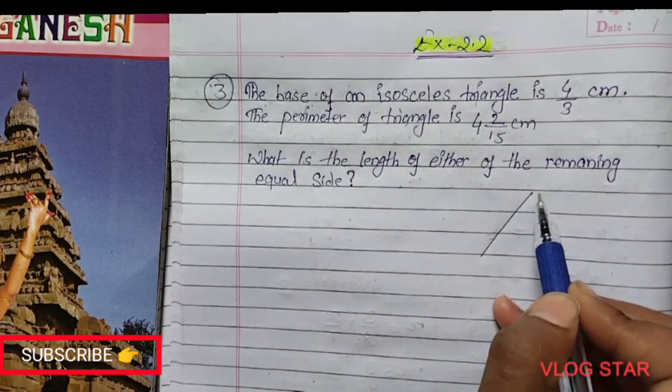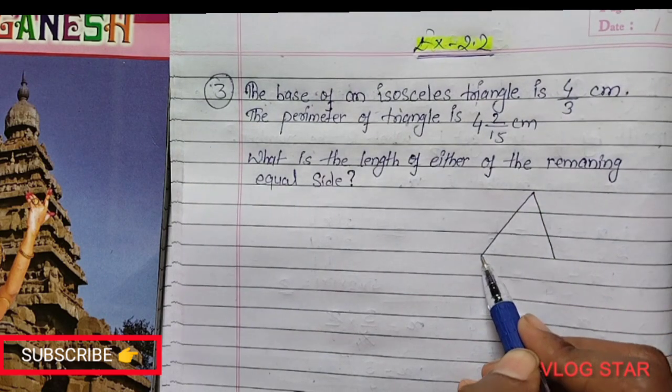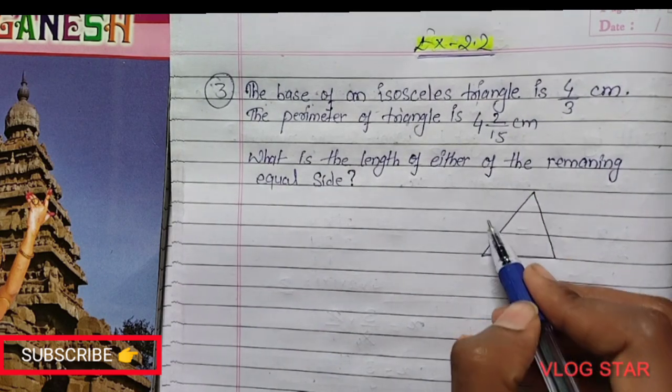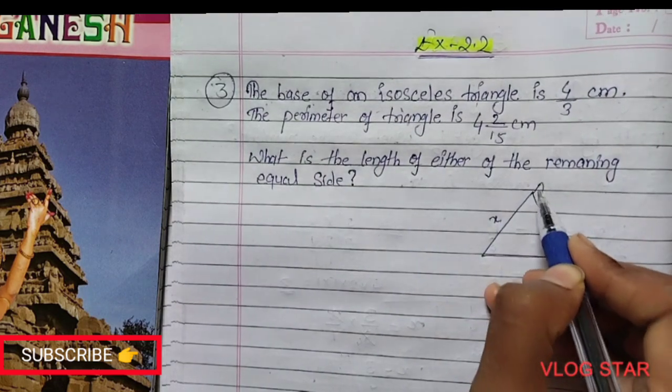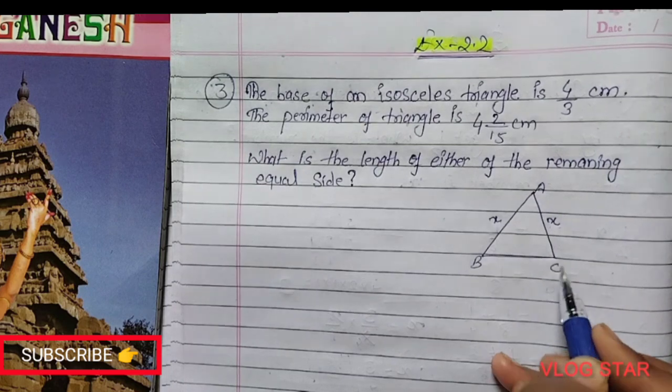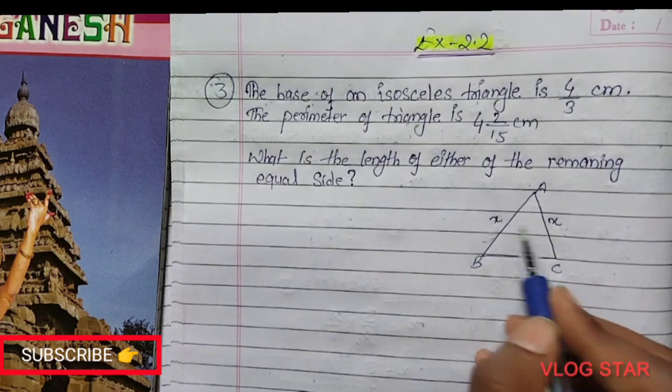We know that the two sides of an isosceles triangle are equal. I am going to take these two sides as equal. If ABC is a triangle, these two sides are equal. I am going to take the equal sides...